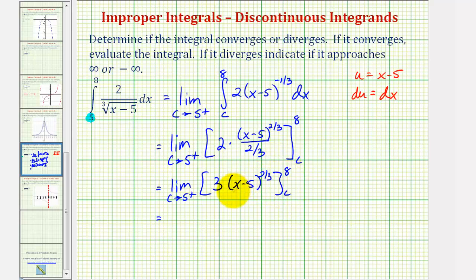And now we'll first substitute eight for x and then c for x. So when x is eight, we would have three times eight minus five is three. So three to the two-thirds minus, substituting c for x, we would have three times the quantity c minus five raised to the two-thirds power.